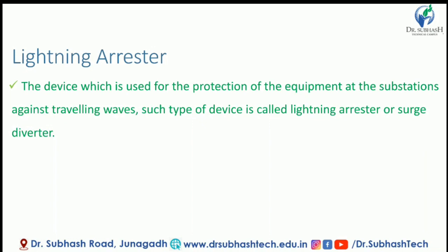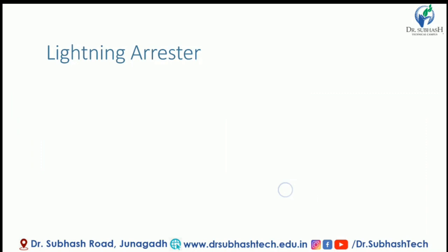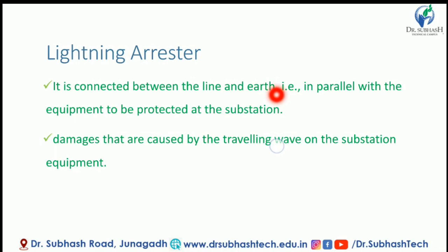When travelling waves are present, we use this equipment — the Surge Diverter and Lightning Arrestor. The Lightning Arrestor always diverts abnormal high voltage to the ground without affecting the continuity of supply. It is connected between the line and the earth, in parallel with the equipment to be protected at the substation.